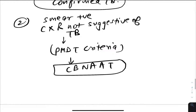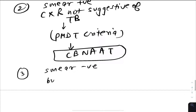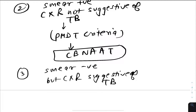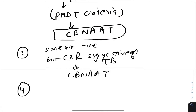The third condition is when the smear is negative but chest X-ray is suggestive of TB. In this case, to confirm the diagnosis, you go for CBNAAT.